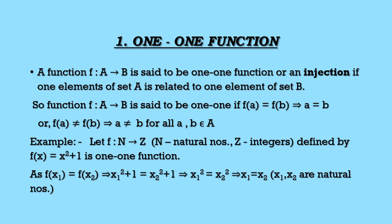This condition must hold for all A, B belonging to set A. This is the method to verify whether a function is one-one or not. If two images are equal, then the corresponding elements must be equal — this is the important condition we have to check.